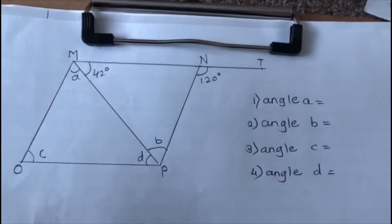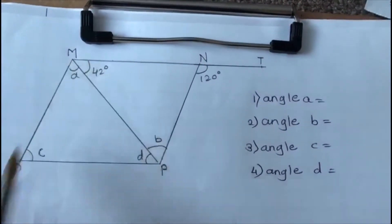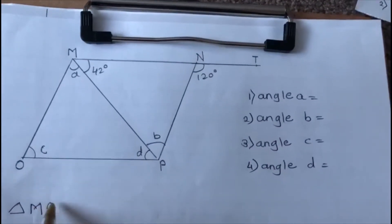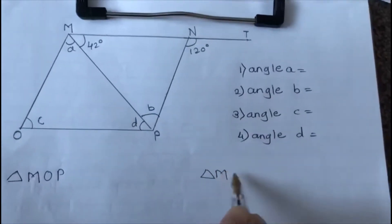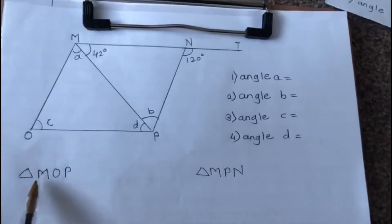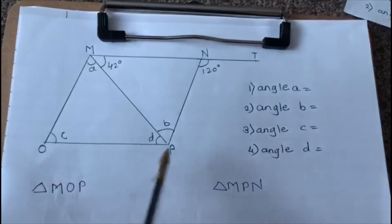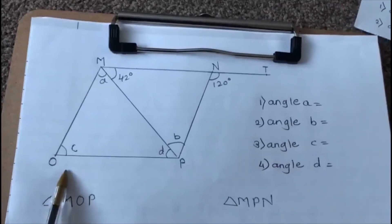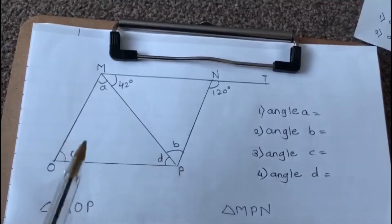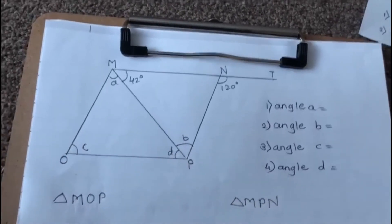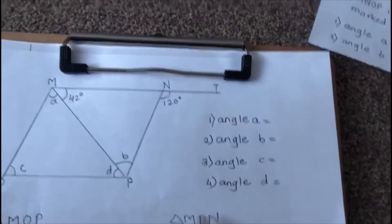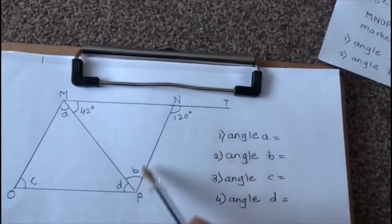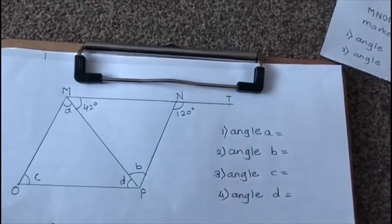In this parallelogram there are two triangles: MOP and MPN. In triangle MOP we don't know angle A, angle D, and angle C. If we know any one or two angles then it's easy to find the third angle, but in this case we don't know any angle, so it's very difficult. In triangle MPN we know only one angle which is 42 degrees, and we don't know angle B and angle E.